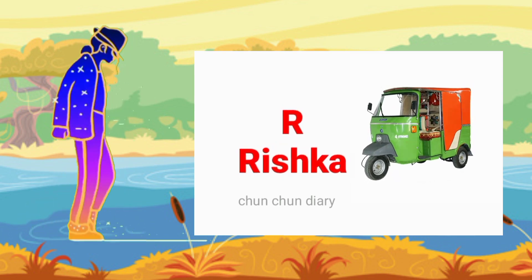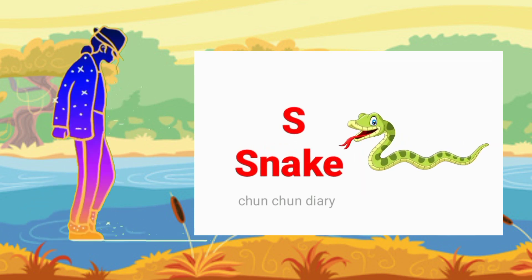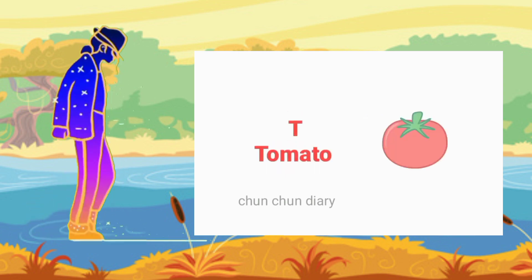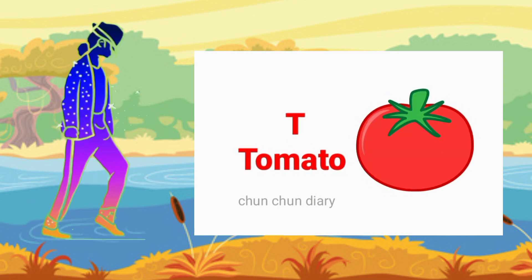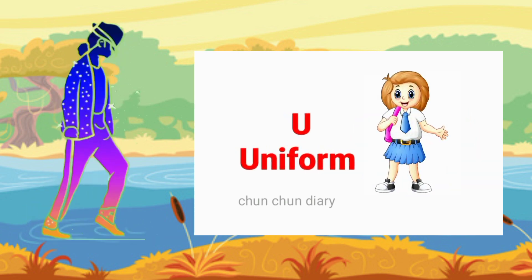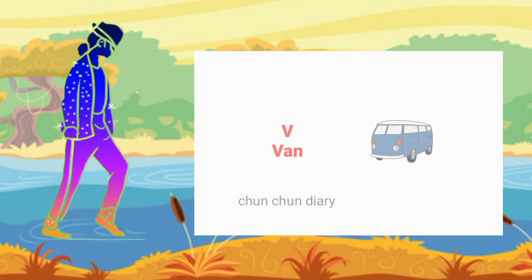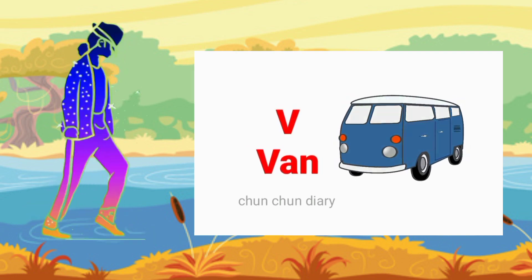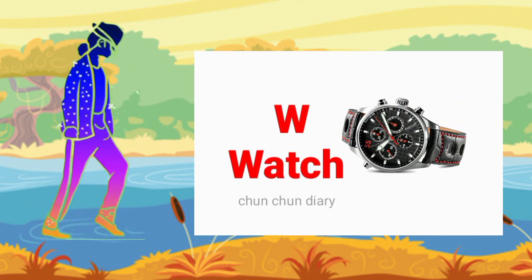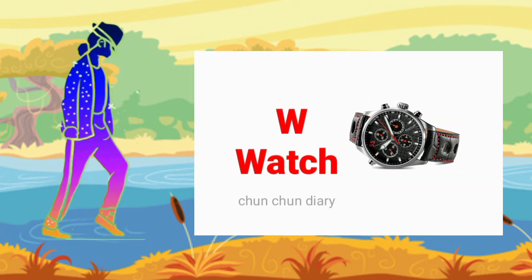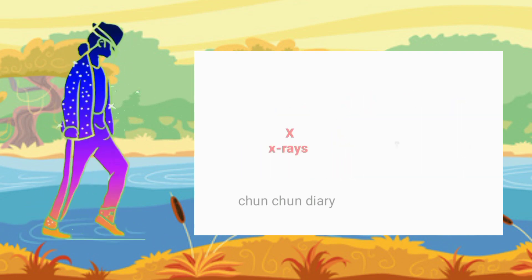R for rickshaw, S for snake, T for tomato, U for uniform, V for van, W for watch.